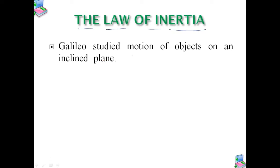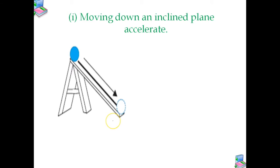Galileo studied motion of objects on an inclined plane. In the first figure you can see objects which are moving down. The objects which are moving down an inclined plane accelerate. When an object is moving down from an inclined plane, it will accelerate — it will increase its speed.